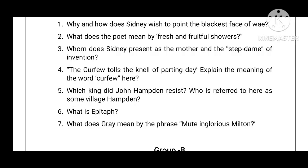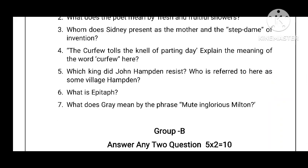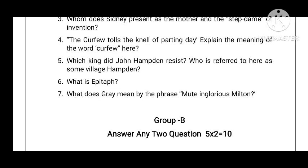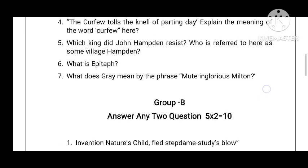This is the first line in that poem. Which king did John Hampden resist, and who is referred to here as 'some village Hampden'? Next: what is an epitaph?